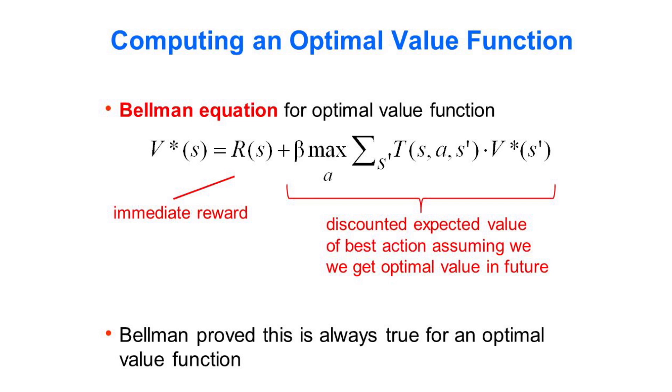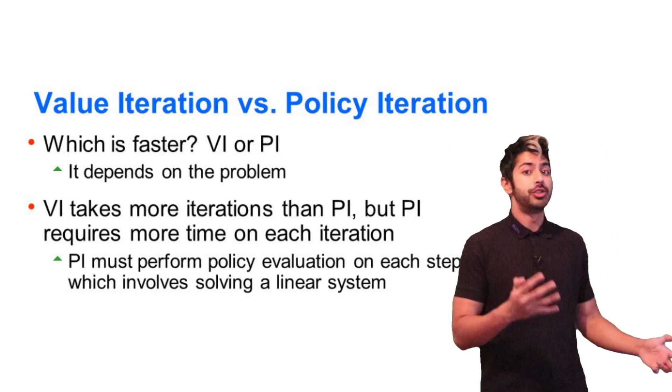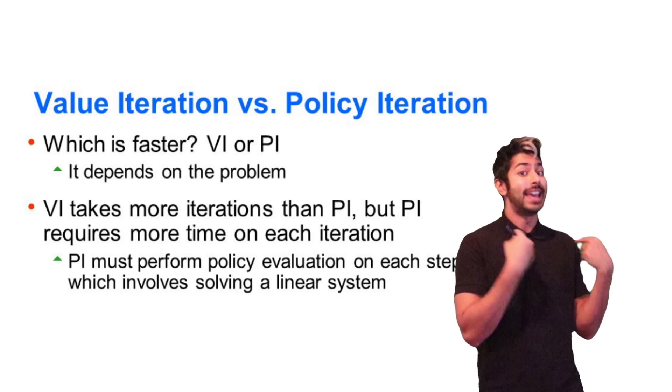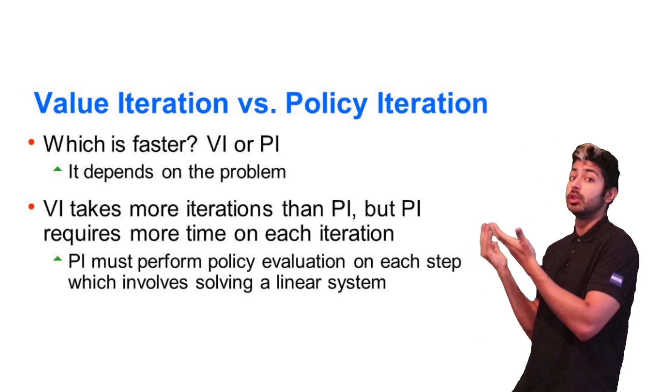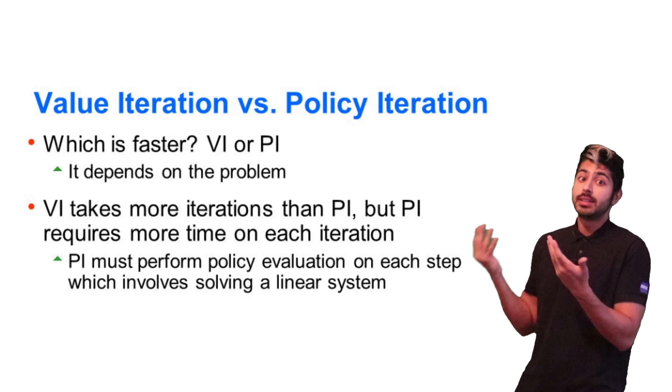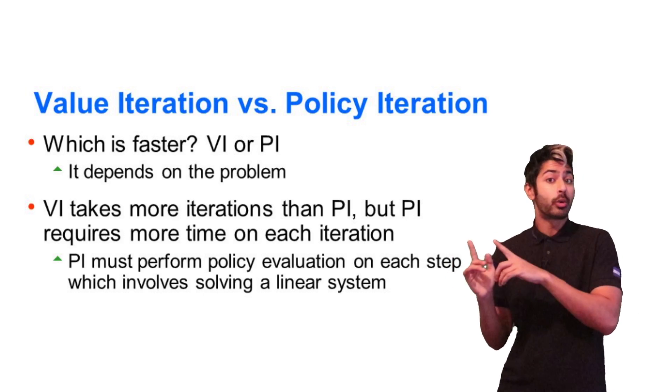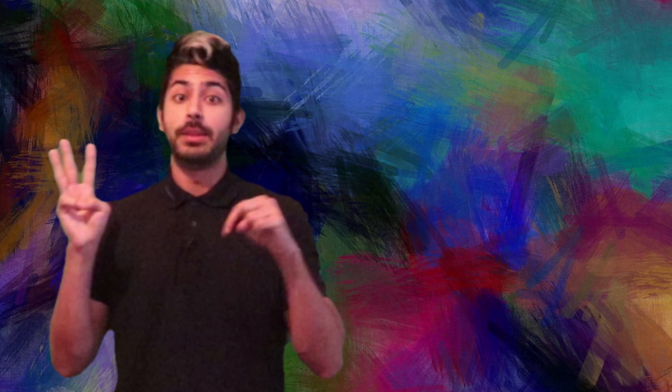So value iteration computes the optimal state value function by iteratively improving the estimate of V of S. Both value iteration and policy iteration algorithms assume the MDP model is known by the agent. Comparing to each other, policy iteration is computationally efficient as it often takes considerably fewer number of iterations to converge, although each iteration is more computationally expensive.